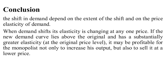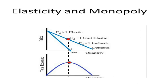So it should be clear that the effect of a shift in demand depends upon the extent of shift and on the price elasticity of demand. When demand shifts, its elasticity is changing at any one price. If the new demand curve lies above the original and has a subsequently greater elasticity at the original price, it may be profitable for the monopolist not only to increase output but also to sell it at a lower price. In the last diagram, we can clearly show that when elasticity is greater, total revenue goes on increasing up to the point of unit elastic demand. The red point D is showing the unitary elastic demand curve.